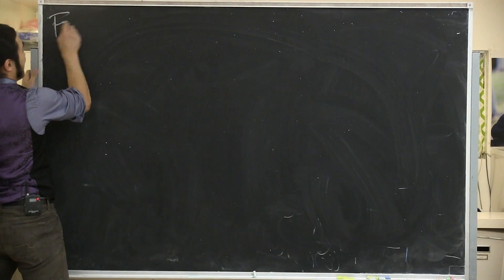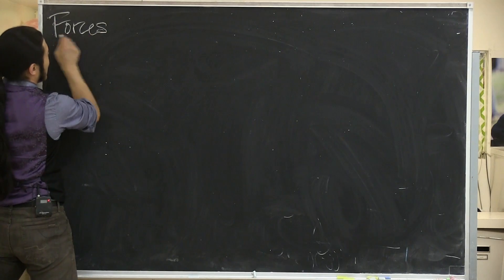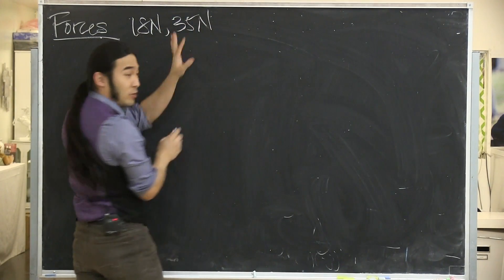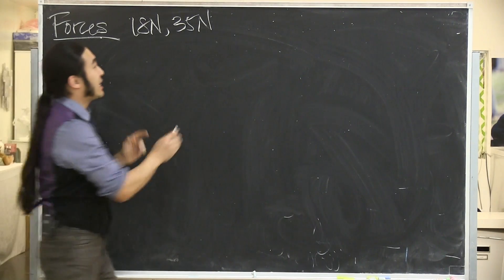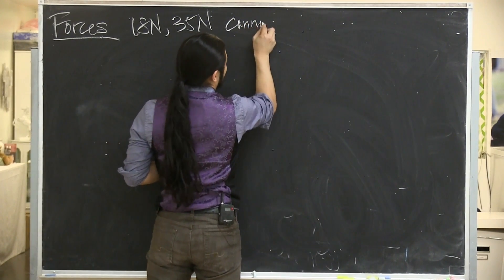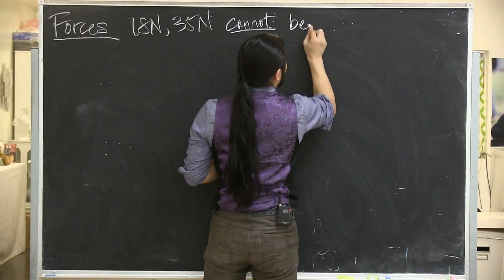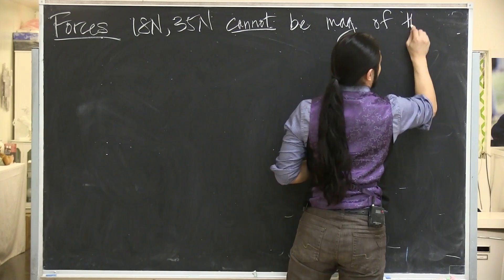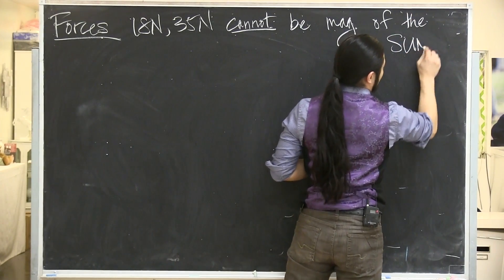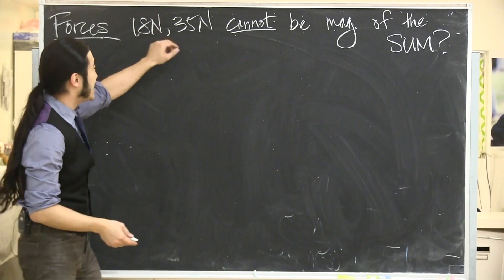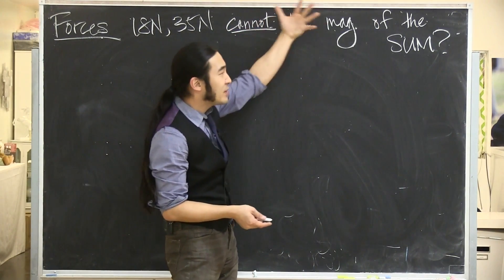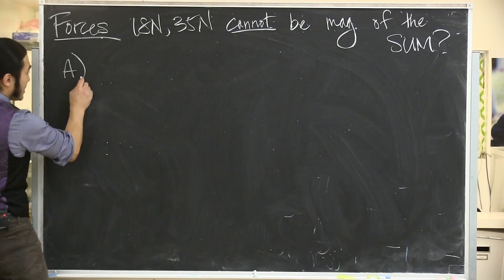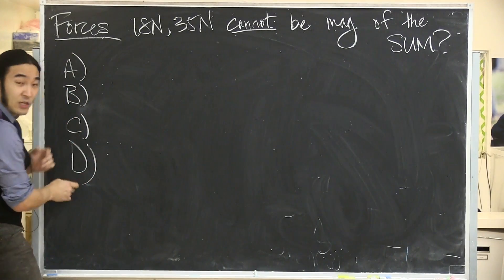So let's say we have two forces — one of 18 newtons and one of 35 newtons — and that's all we're told. The question is: which of the following cannot be the magnitude of the sum of these two forces? Two forces, 18 and 35 — which of the following cannot be the magnitude of their sum?